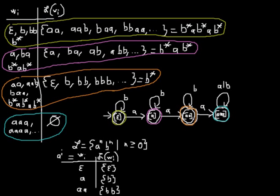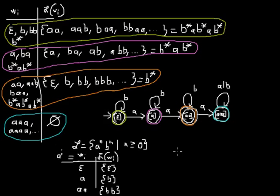What the Myhill-Nerode theorem says is that the exact number of those equivalence classes corresponds to the number of states in the minimal deterministic automaton. Therefore you can say that one equivalence class corresponds to one state in the automaton. With this, you could prove that a language is regular, and you could also prove that a language is not regular, using the Myhill-Nerode theorem.